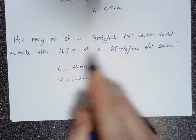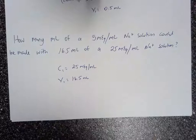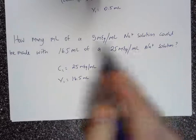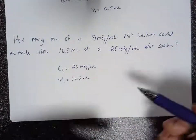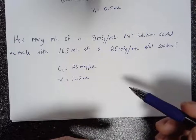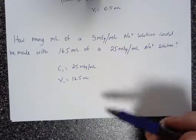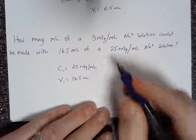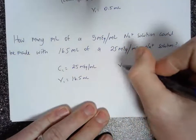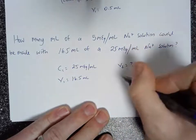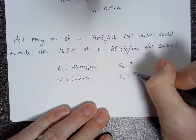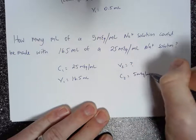And V1 is going to be 16.5 milliliters. So in this case, the stock concentration and the stock volume are given. And this is how much I have, this is all that I have, how much of a 5 milliequivalent per milliliter sodium solution could be made. So V2 is the question mark. C2 is 5 milliequivalents per milliliter.